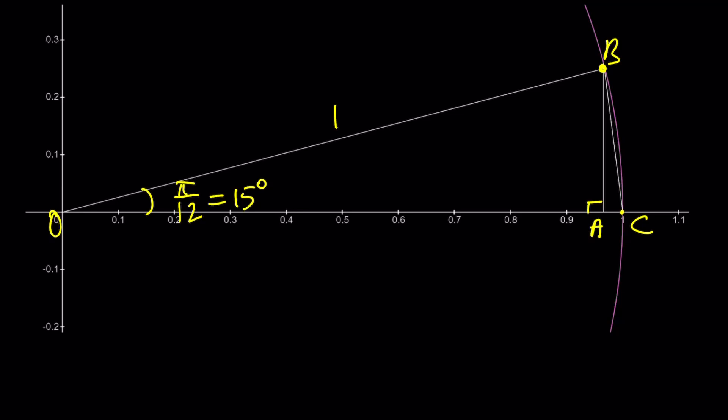So, if you consider point B, the x-coordinate of point B is going to be cos(π/12). So, OA is actually cos(π/12). And AB is going to be sin(π/12). Make sense? Okay. Those are going to be the lengths. And the hypotenuse is obviously 1, right?